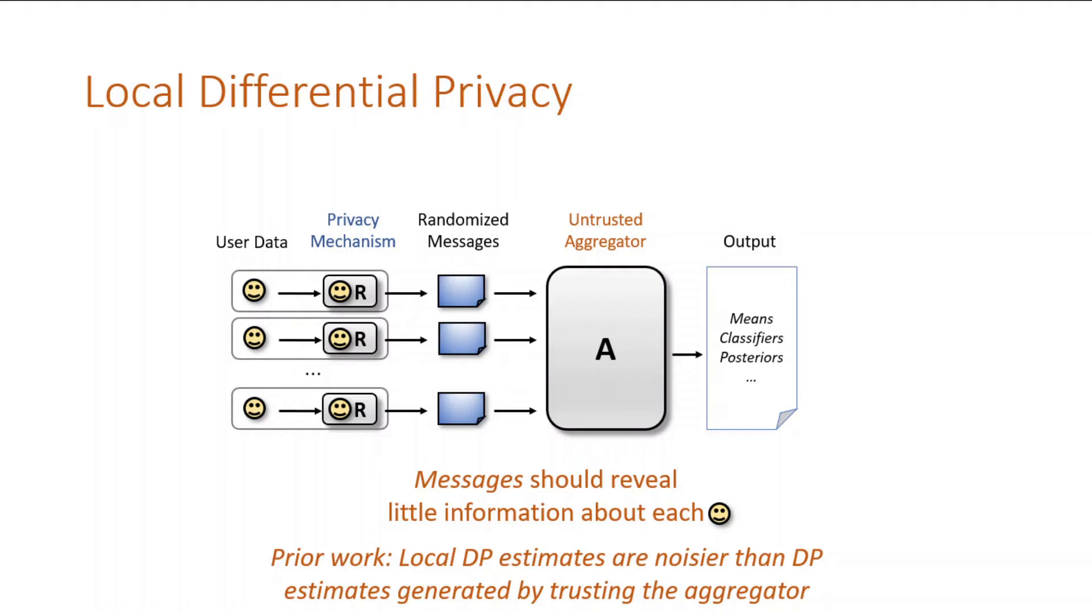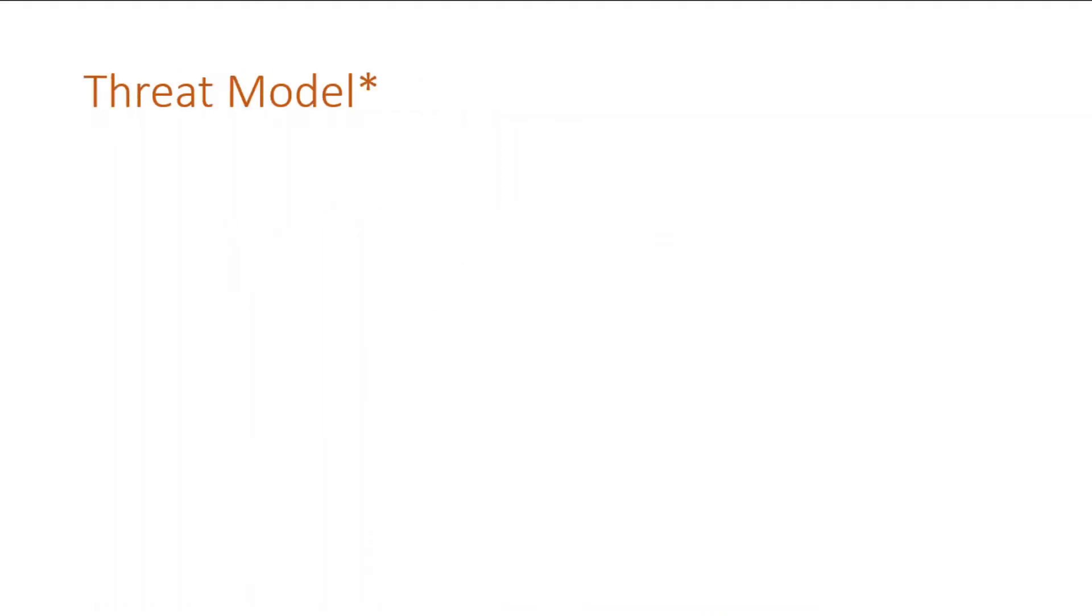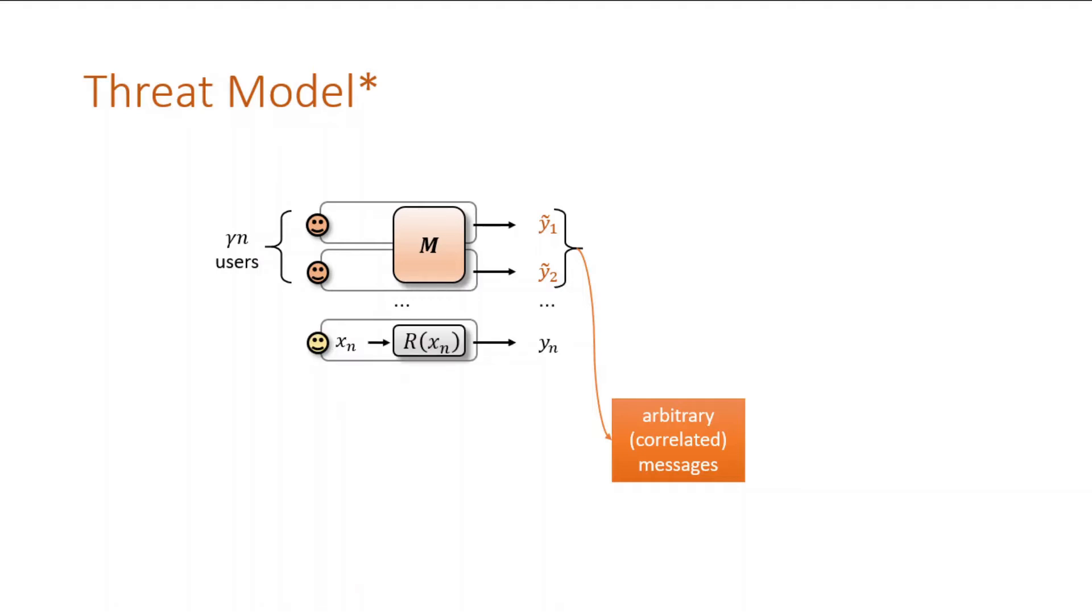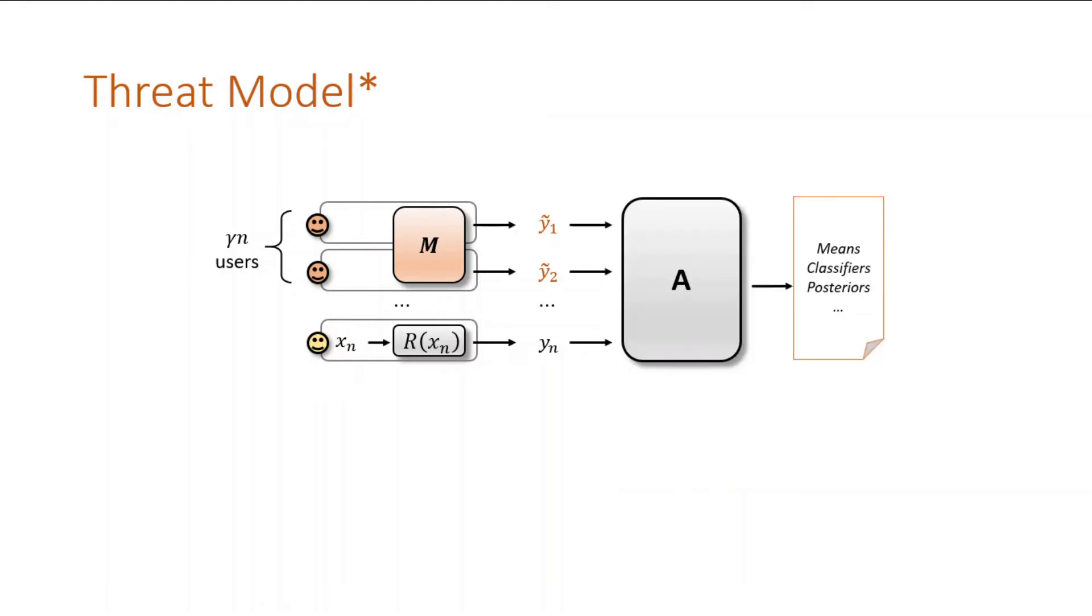In our work, we consider a different flaw of the model. In our threat model, the goal of an adversary is to skew the aggregator's output. The adversary controls a gamma fraction of the users who report arbitrary messages. The rest of the users are honest and run the local randomizer. The aggregator computes on all messages.